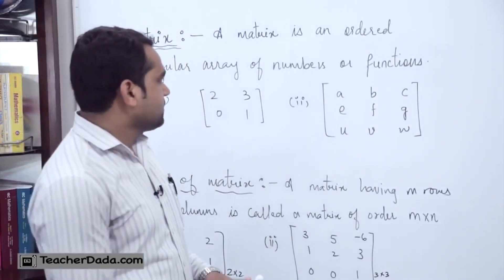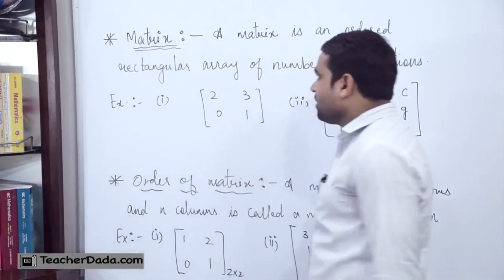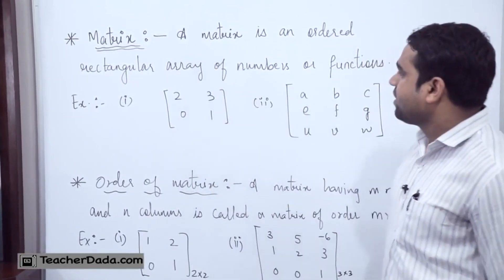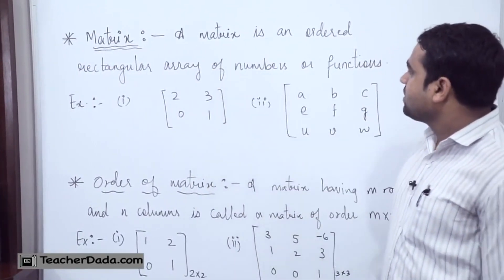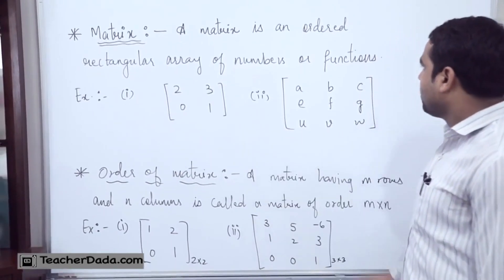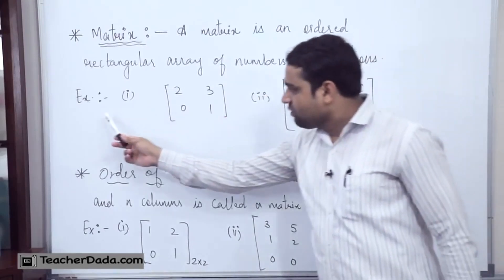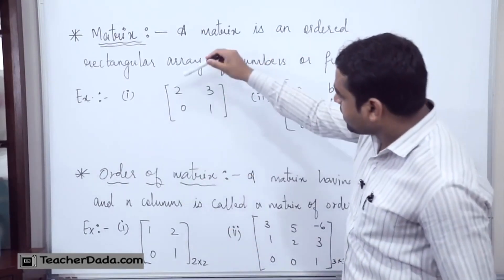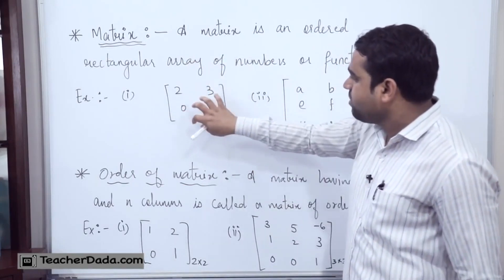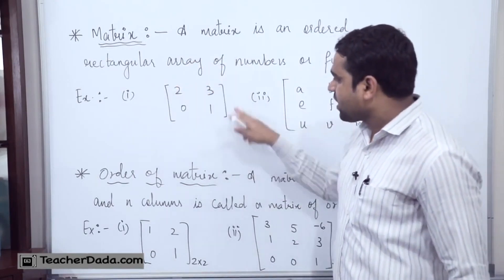Now, we will see what is a matrix first. If you see on the board, I have defined what a matrix is. Very simply, we can define it as a matrix is an ordered rectangular array of numbers or functions. We have an example also. You can see we have put four elements in the square bracket.